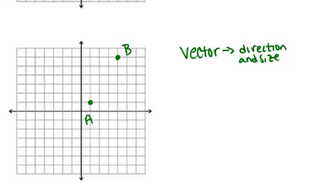So if we were to translate point A up to point B, this vector, which is like a ray, shows the translation.